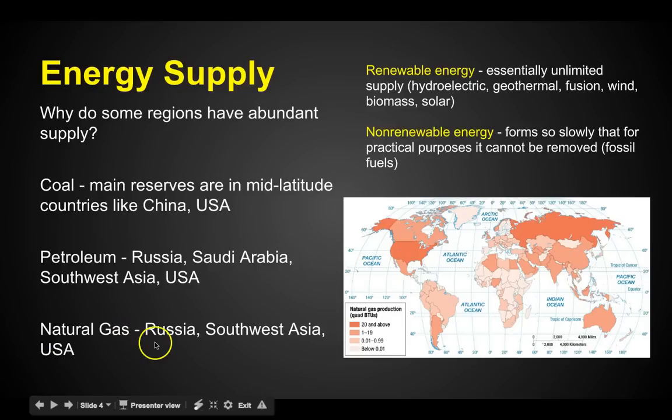Natural gas reserves are found in Russia, Southwest Asia, and the United States. There are two forms of energy. Renewable energy is essentially unlimited — think hydroelectric or water, geothermal, fusion, wind, biomass, and solar. These can theoretically go on forever without being used up.